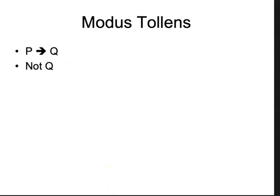Modus tollens looks a little bit different. It might seem like I'm contradicting myself because modus tollens somewhat seems to go the wrong way up the arrow — but keep in mind, it's doing it with a 'not.' If P, then Q. But it's actually saying not Q. And from those two premises, we are able to derive validly: not P.